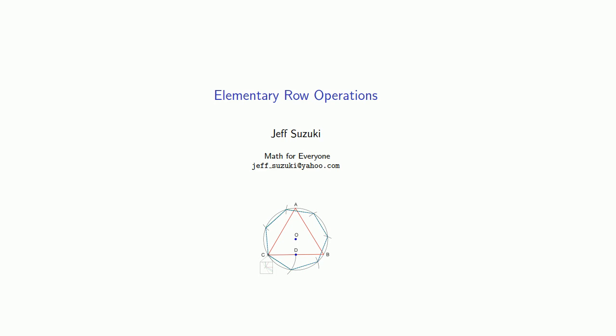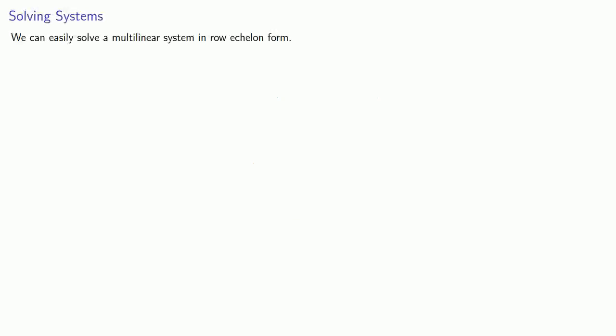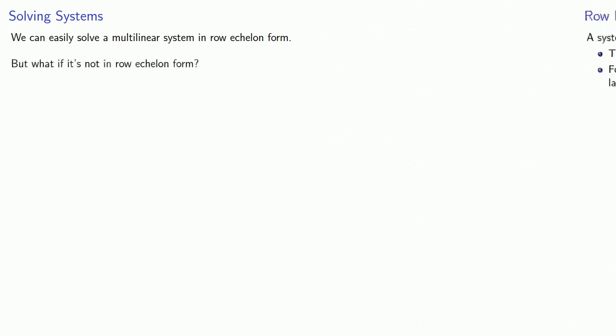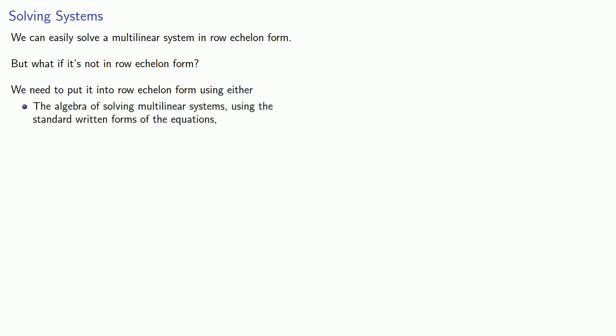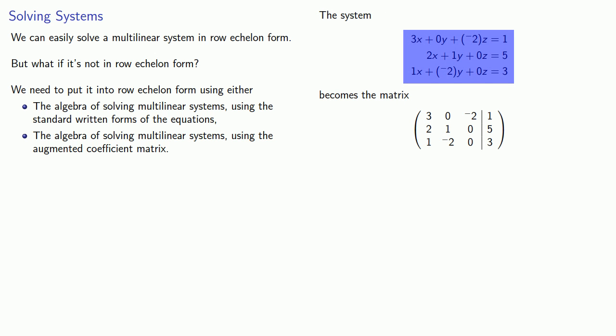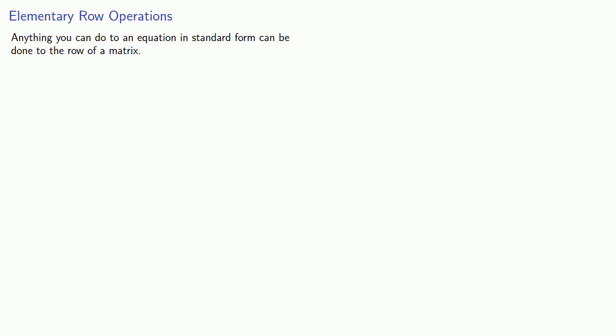A useful aspect of matrix algebra is our ability to solve multilinear systems through the use of what are called elementary row operations. If we have a system of equations in row echelon form, we can solve it easily through back substitution. But if it's not in row echelon form, we need to put it into row echelon form using either standard equation algebra or the algebra of the augmented coefficient matrix. Since every row of a matrix corresponds to the coefficient and constant of an equation in standard form, anything you can do to an equation can be done to a row of a matrix. This produces the elementary row operations.